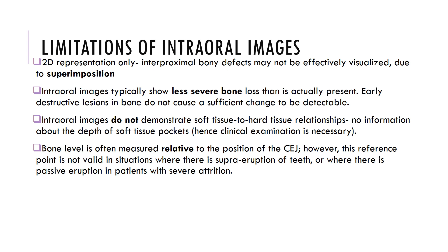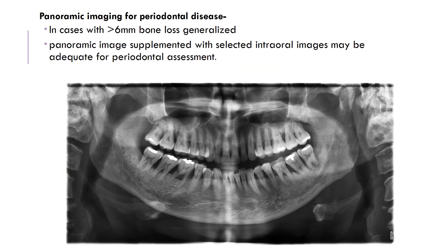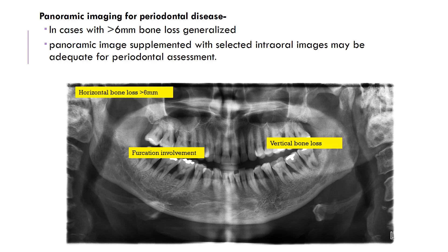Nevertheless, intraoral images are the backbone of diagnosis and treatment planning for any form of dental disease. Panoramic imaging is also very useful for periodontal diseases, more so in cases where there is more than 6mm bone loss overall, and panoramic images supplemented with selected intraoral images are very adequate for periodontal assessment. For example, the panoramic image shown here demonstrates multiple areas of bone loss greater than 6mm.